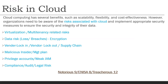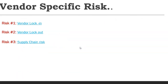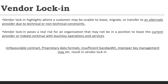Now we come to the topic: vendor-specific risk. There are three types of risk we'll discuss — vendor locking, vendor lockout, and supply chain. Vendor locking is a situation where a customer is unable to leave, migrate, or transfer to any alternate provider due to technical or non-technical constraints. For example, you want to move from Azure to Oracle or Oracle to Google but are unable to do so — that situation is called vendor locking.